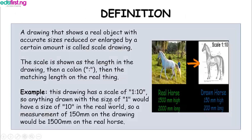A drawing that shows a real object with accurate sizes reduced or enlarged by a certain amount is called a scale drawing. The scale is shown as the length in the drawing, then a colon, then the matching length on the real thing. For example, this drawing over here has a scale of 1 to 10.